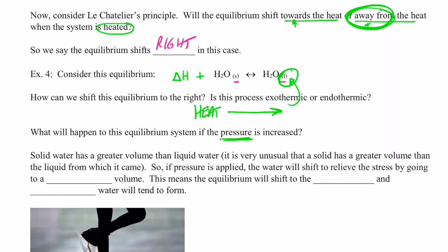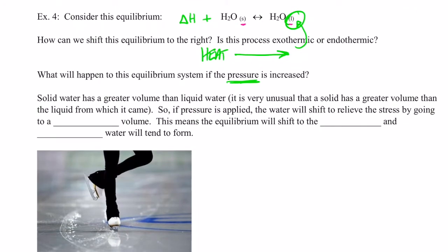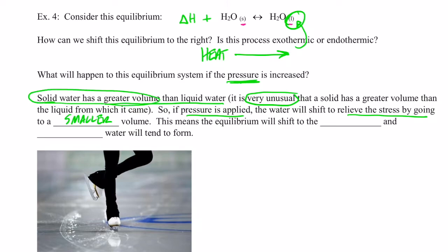It turns out that solid water has a greater volume than liquid water, which is very unusual — for all intents and purposes, it's the only substance whose solid has a greater volume than its liquid. So if pressure is applied, the water will shift to relieve the stress by going to a smaller volume. Adding pressure means the system wants to go to the smaller volume. Since solid has the greater volume, the smaller volume is the liquid. So the equilibrium shifts to the right — liquid water forms.